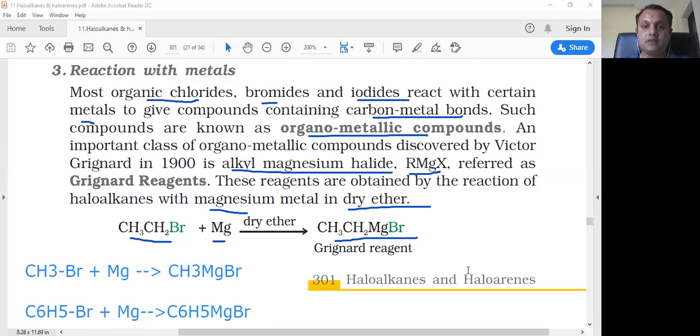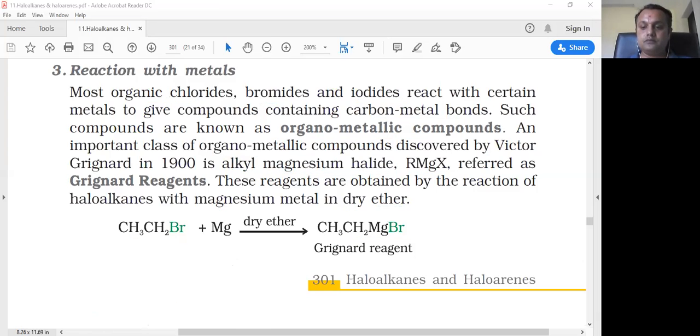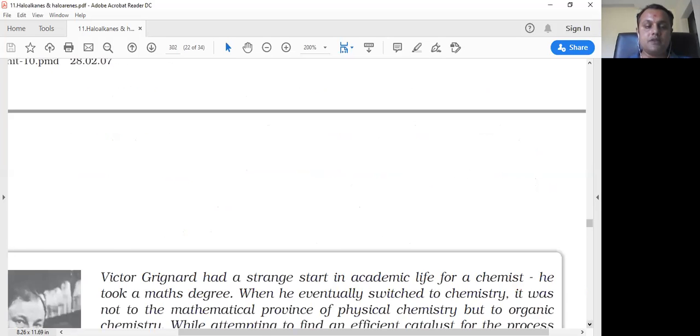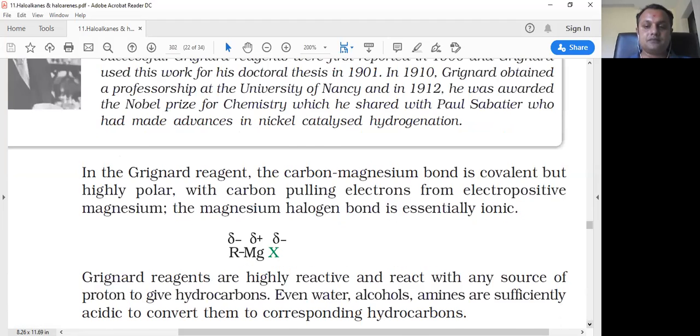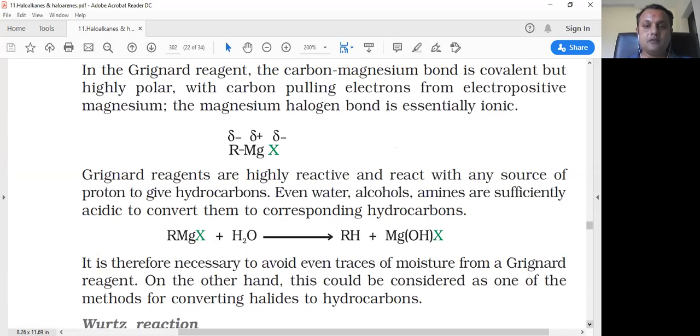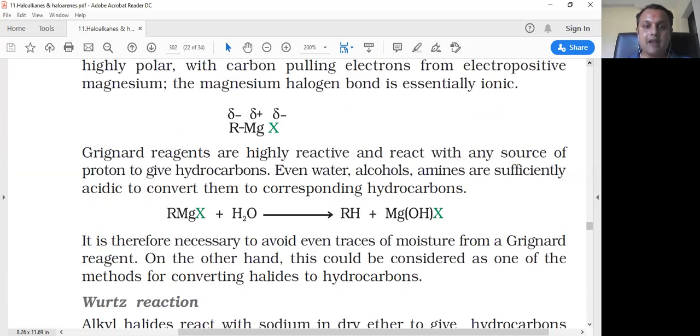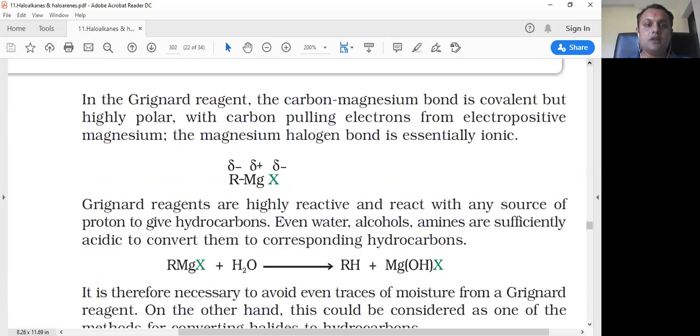RMgX is polar in nature. In the Grignard reagent, the carbon-magnesium bond is covalent but highly polar, with carbon pulling electrons from electropositive magnesium.